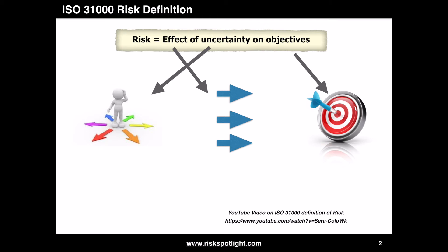Let's start with the ISO 31000 definition of risk, which defines risk as the effect of uncertainty on objectives. In a separate YouTube video I have covered the ISO 31000 definition of risk with help of a simple example. You can view this video from the link listed on your screen. For this session we are going to focus on the effect of uncertainty aspect of the definition.